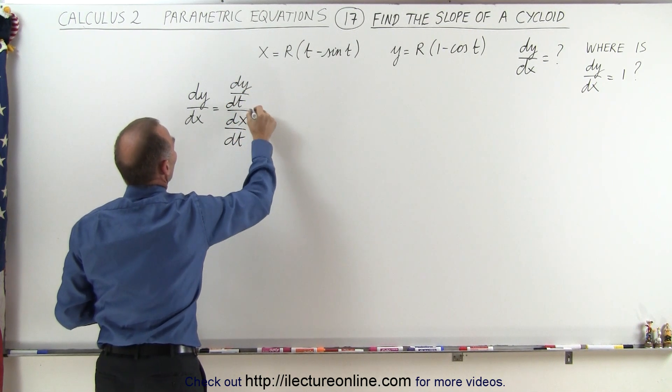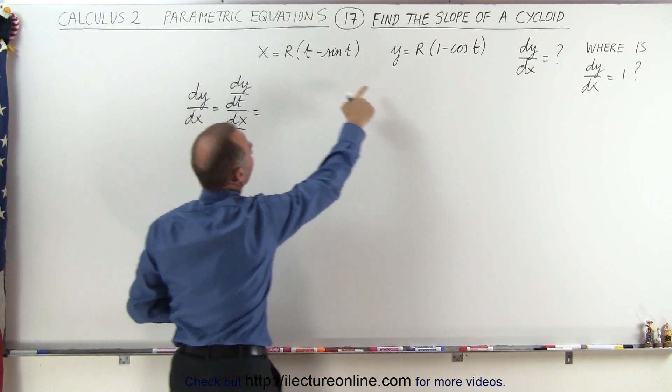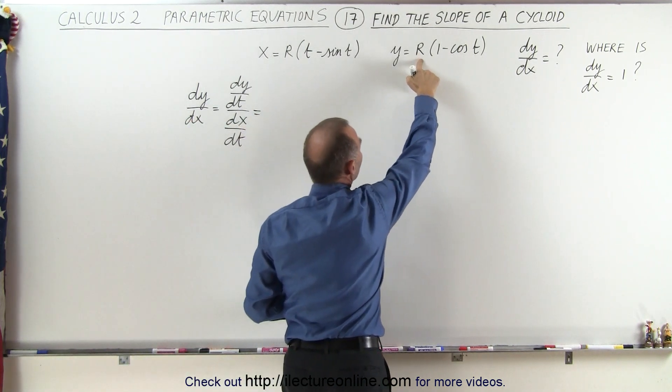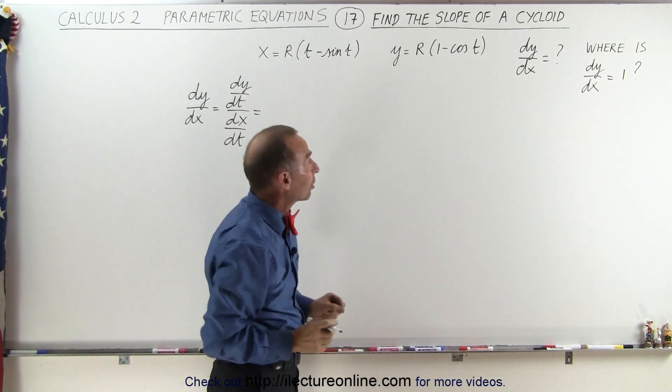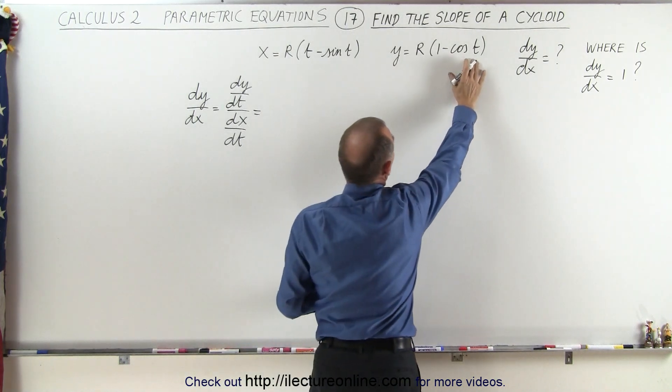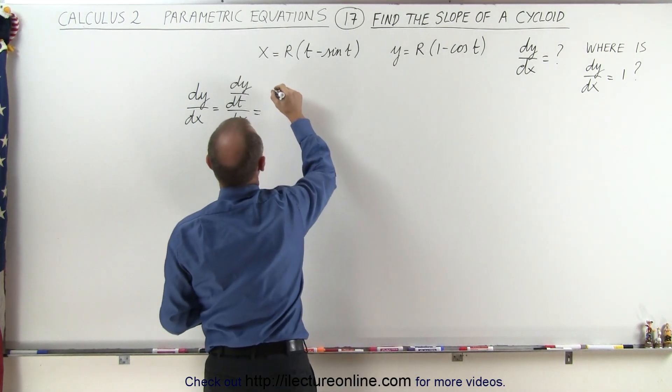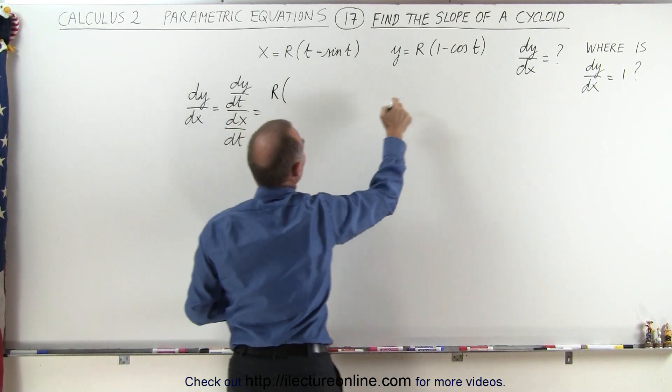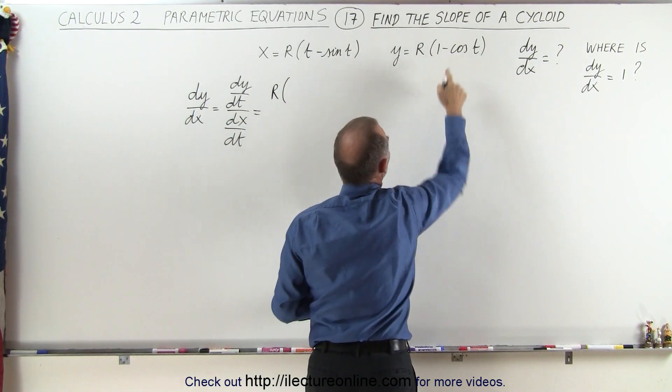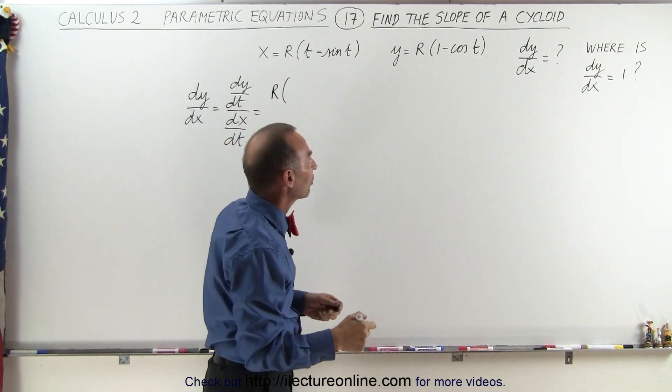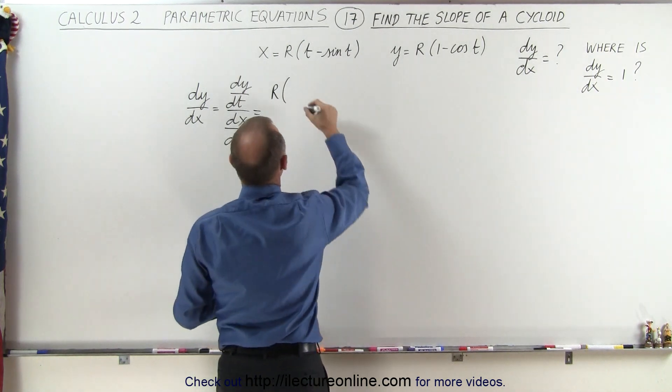And so what we're going to do is find dy dt first. Remember that r is the radius of the circle, that's a constant, so the only variable here is t. So here we have r times the derivative of 1 is 0, and the derivative of cosine is the negative sine, so that becomes the positive sine of t.